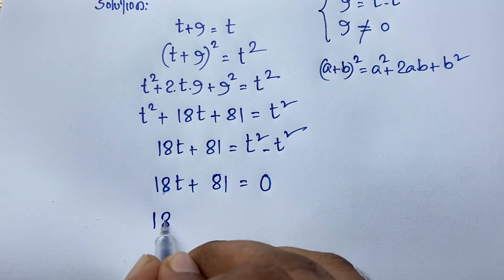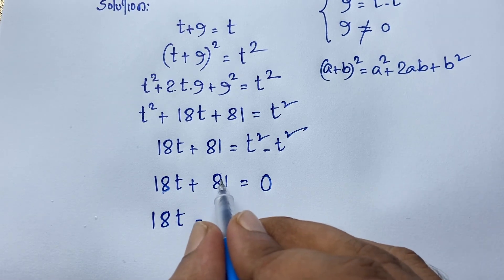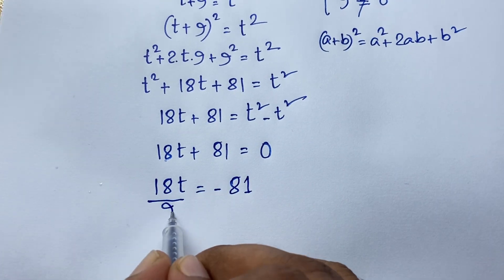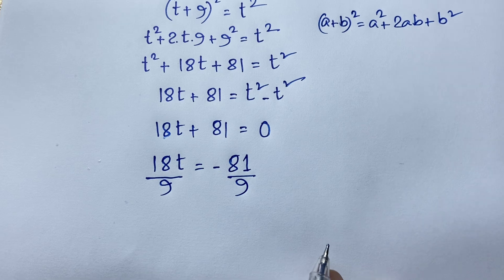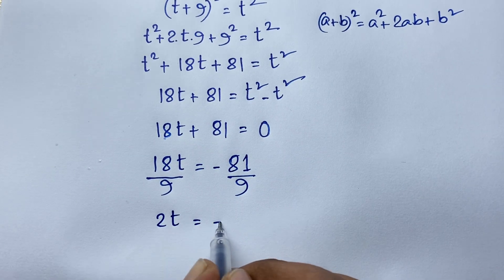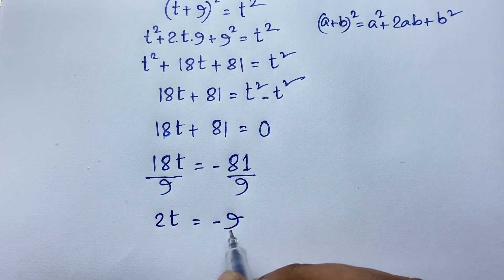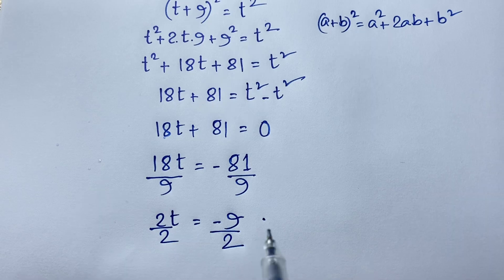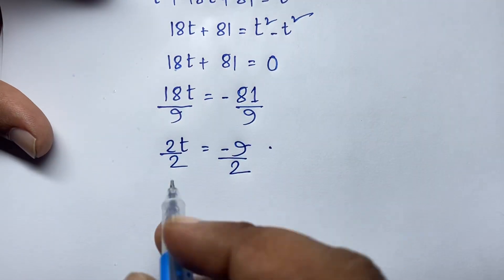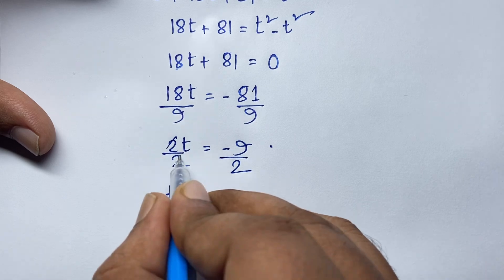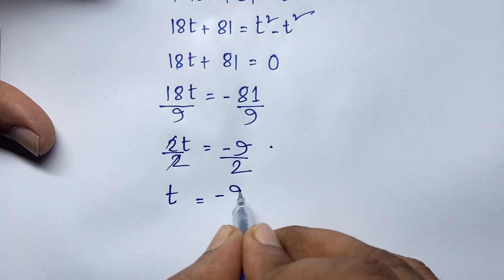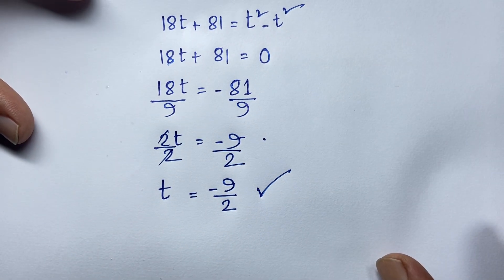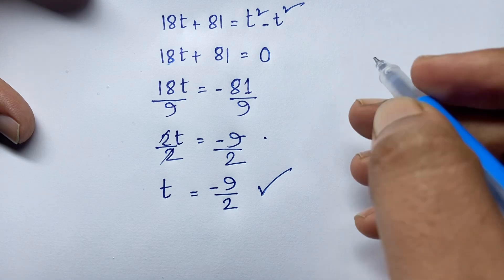We have 18t = −81. Dividing both sides by 9 gives 2t = −9. Dividing both sides by 2 gives t = −9/2. So our final solution is t = −9/2. But let's verify this answer.